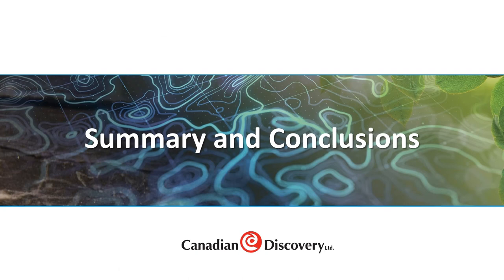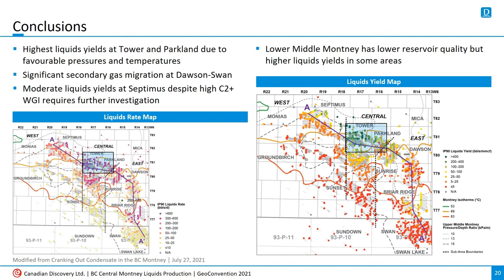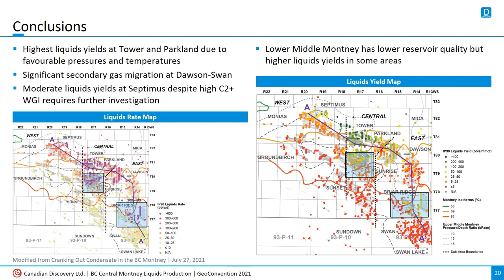And now, for concluding remarks. Let's review the key observations made in this analysis. Septimus has the lowest temperatures, which should favor liquids production, but the liquids yield drops as temperature increases above 63 degrees Celsius. While Ground Birch falls in the wet gas window, production is relatively dry due to the high pressure gradient. Tower and Parkland have the highest liquid yields and rates. At Tower, Ovintiv is using higher completion intensities in the lower, more liquids-rich target zones. Tourmaline and Arc are getting higher liquid yields in the lower-middle Montney compared to the upper Montney near Dawson. We saw evidence of secondary gas migration in the upper Montney near Dawson and Swan. Ovintiv is getting high gas rates at Sunrise and Briar Ridge, and significant liquids production despite the lower yields. At Sunset and Swan, temperatures are too high for these areas to have any meaningful liquids production.